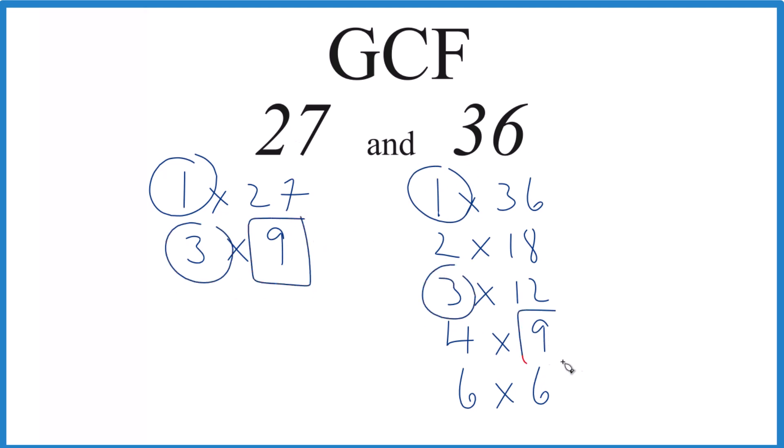9 looks like it's going to be the greatest common factor, a number that goes into 27 and also 36 evenly. So in answer to our question, the greatest common factor for 27 and 36 is 9.